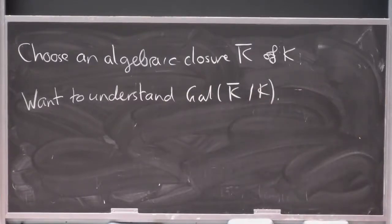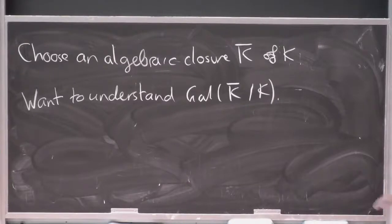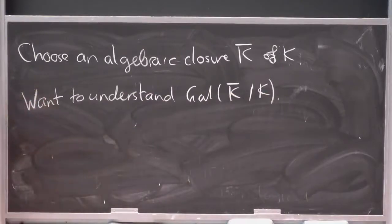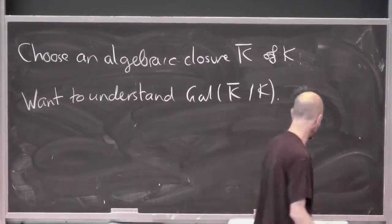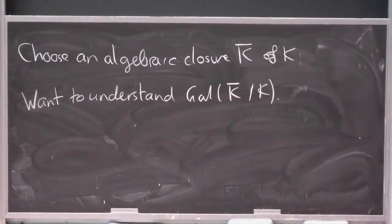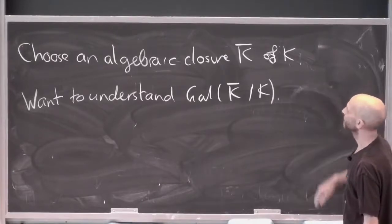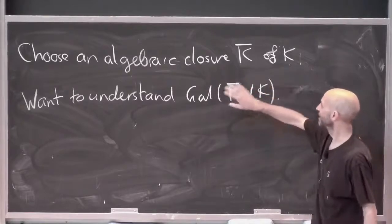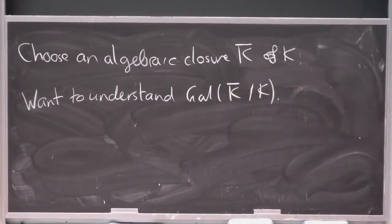The two examples I've done so far — Q(ζ_{p^n}) and finite fields — we worked out the answer and ended up with a group we'd seen before. Here it's much more difficult. Philosophically there's a reason one shouldn't really be able to understand this group: the algebraic closure K̄ is unique up to isomorphism but not up to unique isomorphism.